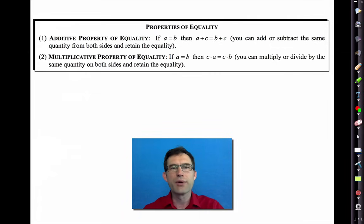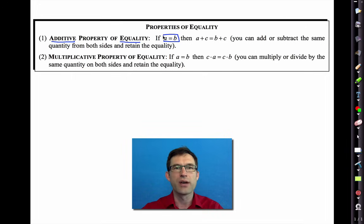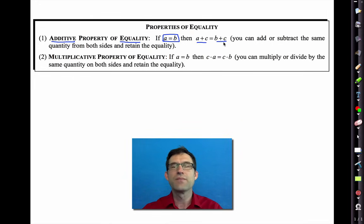There are two main properties of equality. The first one is known as the additive property of equality. What it says is pretty simple: if we've got two expressions that are equal to each other — if A is equal to B — then when we add the same thing to both sides, the equality still holds.